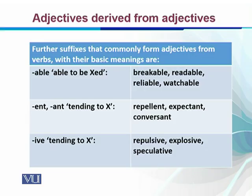The suffix -ent or -ant means 'tending to X.' For example: repellent, expectant, conversant. And the suffix -ive also means 'tending to X,' for example: repulsive, explosive, and speculative.